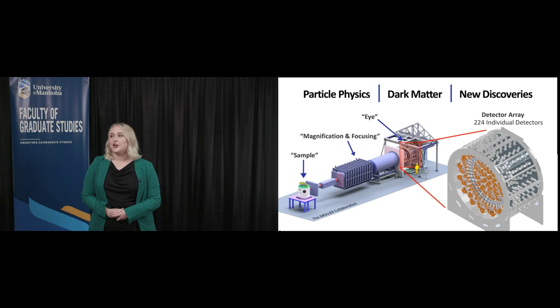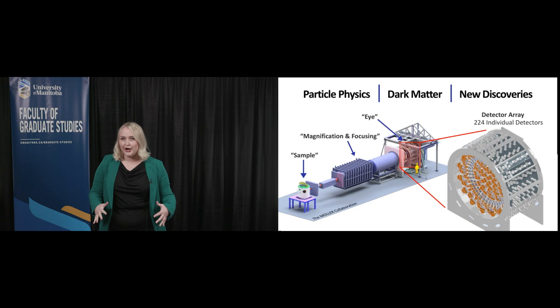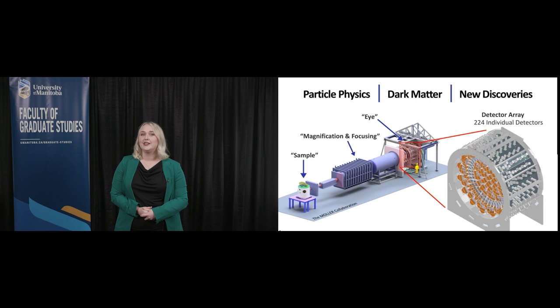We take those accelerated electrons and scatter them from our target, or sample. Then we use incredibly large, powerful magnets to focus those electrons into the eye of the experiment, the main detector system, and the focus of my research.